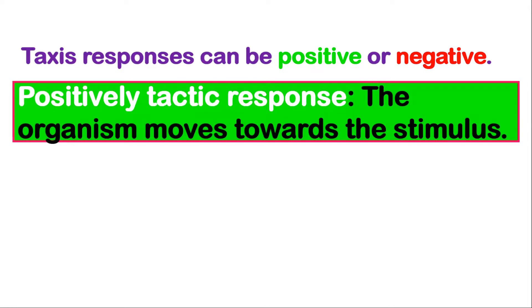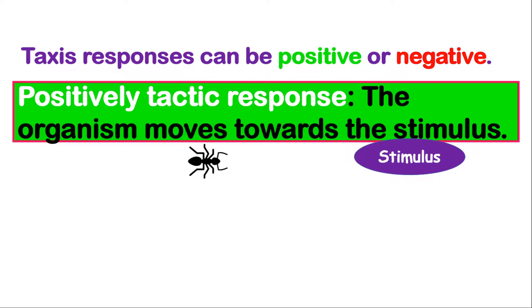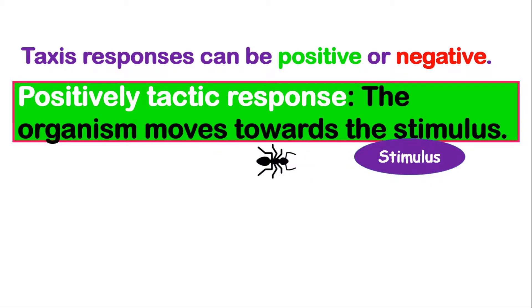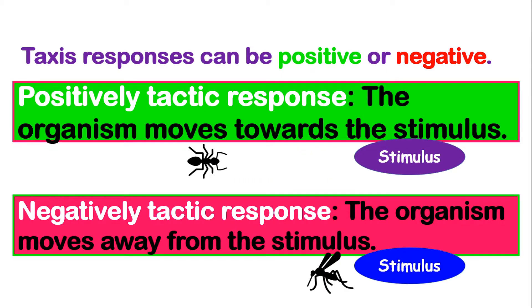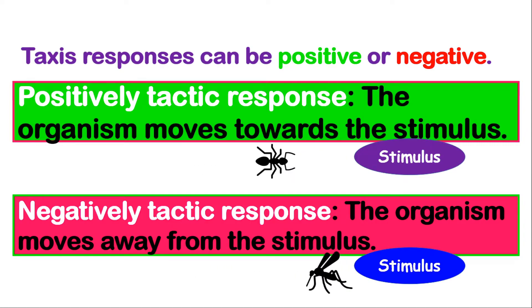If the response is positively tactic, then the organism moves towards the stimulus. As in the demonstration, you notice the insect is moving towards the stimulus. On the other hand, a negatively tactic response means the organism moves away from the stimulus. As in the demonstration, the mosquito is moving away from the stimulus.